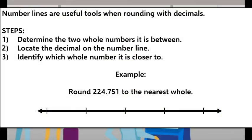Number lines are useful tools when rounding with decimals. First, you want to determine the two whole numbers it's between. Next, you want to locate the decimal on the number line. And last, identify which whole number it's closer to. Let's look at the example.